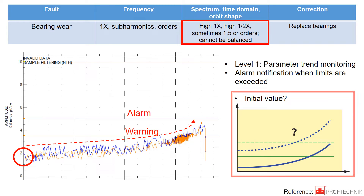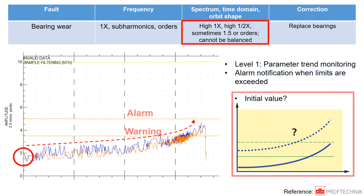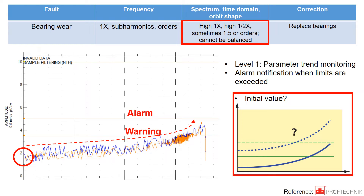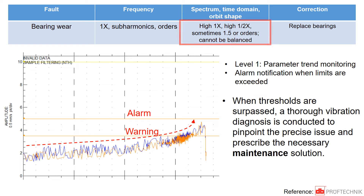So it is important to monitor the vibration over time to prevent catastrophic failure. To prevent failure, it is important to set the warning limit. Establishing initial values is crucial for setting limits such as alarms and warnings. Understanding the rate of increase in vibration is essential. When thresholds are surpassed, a comprehensive vibration analysis is conducted to pinpoint the precise issue and prescribe the maintenance solution.